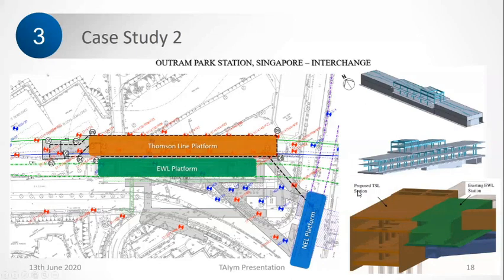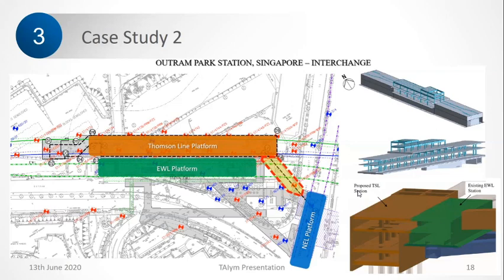It has to be an underpass, but if we do an underpass, we have to make sure our excavation will not cause any settlements to these existing tunnels. In order to do that, we had to follow a scheme which is very stiff and prevents any face collapse. Since the cover between the tunnel and the existing running tunnels is very small, the conventional way of pipe roofing or umbrella roofing was not really possible.